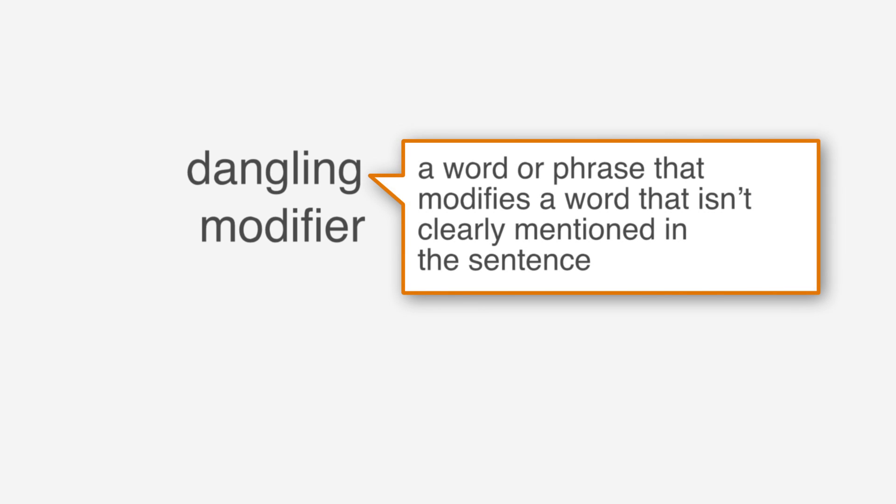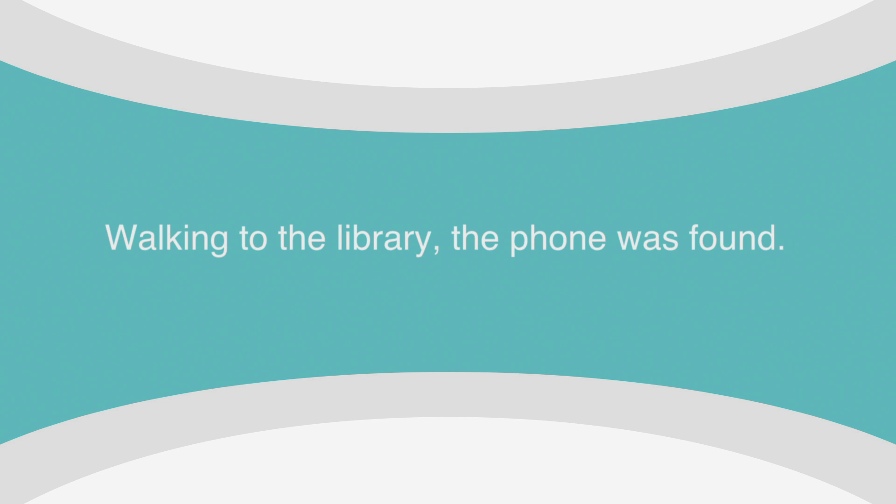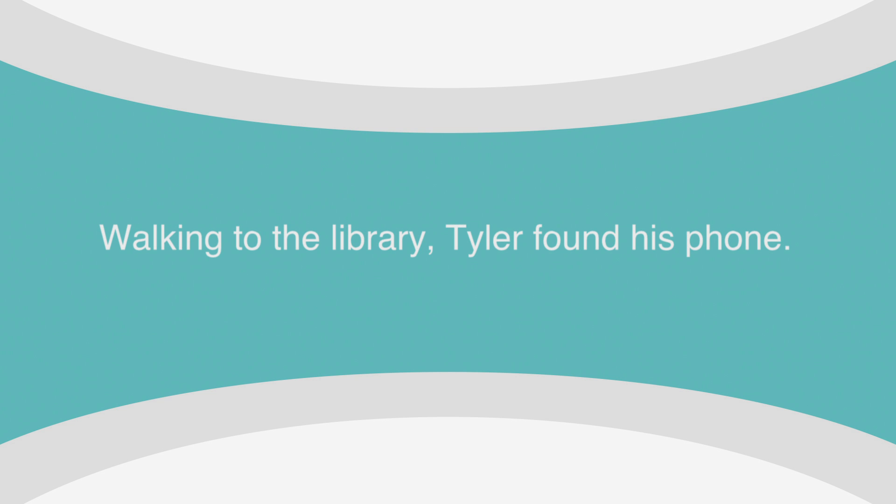Now on to dangling modifiers. A dangling modifier is a word or phrase that modifies a word that isn't clearly mentioned in the sentence. 'Walking to the library, the phone was found.' The dangling modifier is 'walking to the library,' but who was walking to the library? We need a main noun in this sentence. The sentence was correct when it read 'Walking to the library, Tyler found his phone,' because Tyler is the main noun, and with Tyler in the sentence, the modifying phrase makes sense.